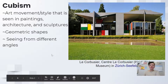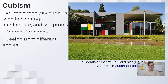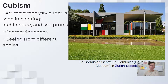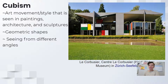Cubism, or the cubist style, was an art movement seen in paintings, architecture, and sculptures. Basically, you can see it in artworks. When I talk about architecture, that means buildings. When we talk about cubism, what we mean is that there are geometric shapes — shapes with angles and points. The only geometric shape that does not have a point is the circle, but every other pointy shape you see is a geometric shape.